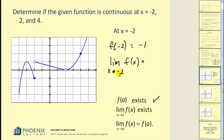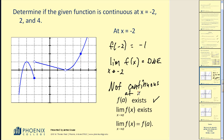To determine this limit we must approach negative 2 from both sides. The right-sided limit looks like it's approaching positive 1, and the left-sided limit looks like it's approaching negative 1. Therefore this limit does not exist, and the function is not continuous at x equals negative 2. This would be non-removable discontinuity because we could not make it continuous by redefining just this one point.